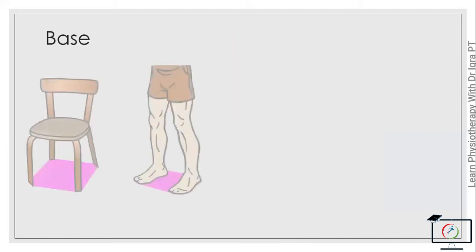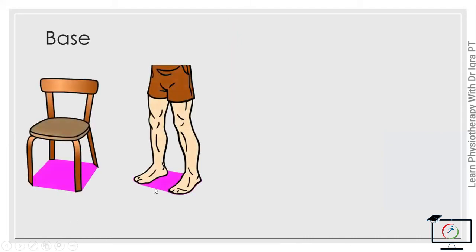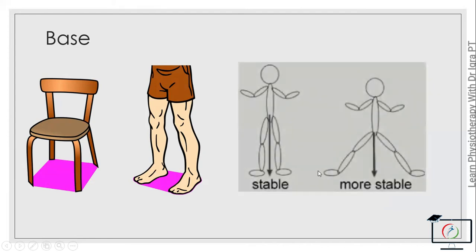The base of support. This is the area on which the body is supported. For example, a chair is resting on its four feet, and the area between these four feet is the base of support. In case of a human body, the area between two feet is the base of support. The larger will be the base of support, the more stable will be the body.